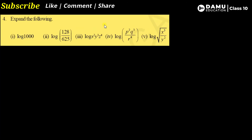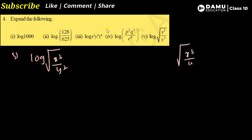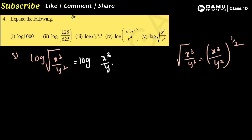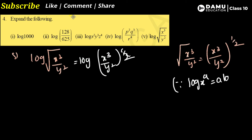Move on to the fifth one: log of √(x³/y²). The square root can be written as a power of ½, so this becomes log[(x³/y²)^(½)]. Applying log(a^x) = x·log(a), this gives (½)·log(x³/y²).